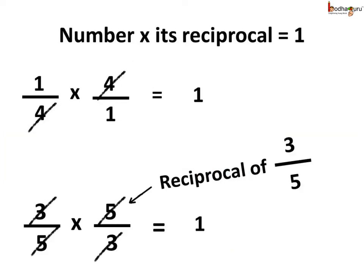Now, the product of a number and its reciprocal is always 1. Like, 1 by 4 multiplied by its reciprocal which is 4 by 1 — we can cancel the common factors from the numerator and the denominator, so only 1 remains. Another example: 3 by 5 multiplied by its reciprocal, that is 5 by 3. Here, 3 and 3 cancel each other, 5 and 5 cancel each other, and we get the product as 1.